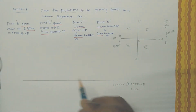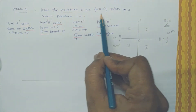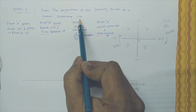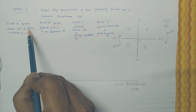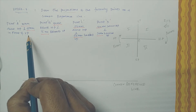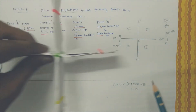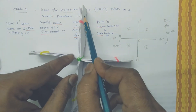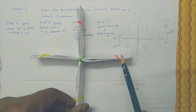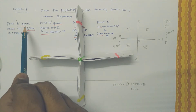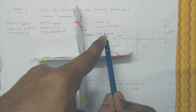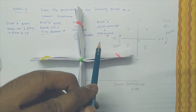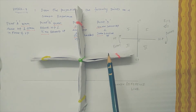The question is: draw the projection of the following points on the common reference line. The first question — point A is 35mm above HP and 25mm in front of VP. Let us consider this is a first angle projection we need to discuss. The point A is 35mm above HP and 25mm in front of VP.